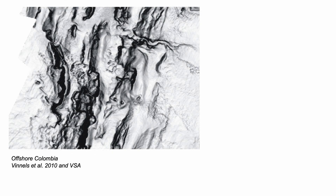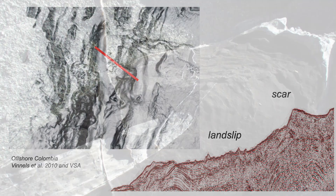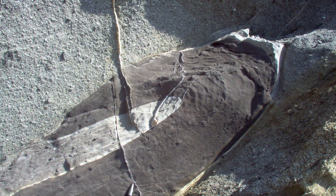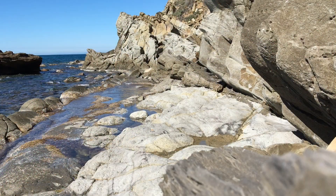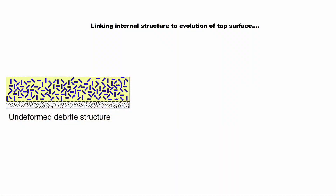Submarine landslides, seen here on the modern seabed, can create chaotic deposits called debrites, where different formations have been mixed together as the seabed slid off downslope. The internal structure of debrites is commonly considered to be chaotic, but as they have relatively rigid clasts in a soupy matrix, deformation can align the clasts through rotational strain.